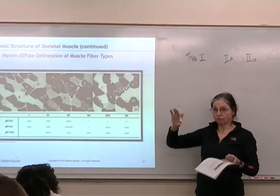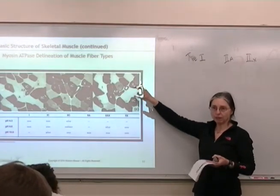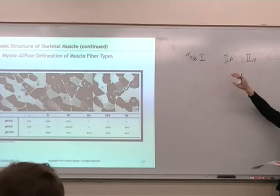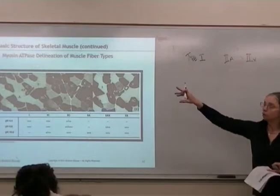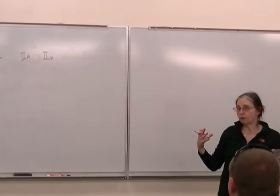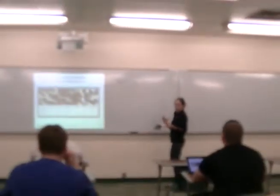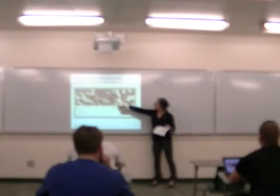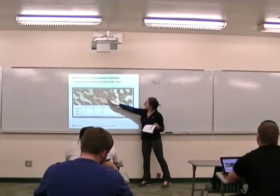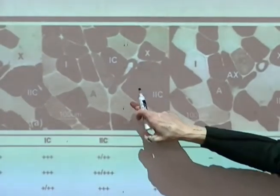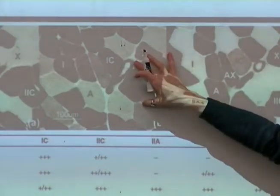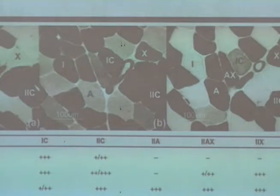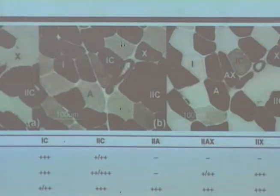Hundreds of muscle fibers. Every muscle fiber can be either a type 1, a 2A, or a 2X. Don't get confused with the whole muscle. If you look at these stainings, you can see a cut through a piece of muscle — some type 1s, some type 2As, some type 2Xs.